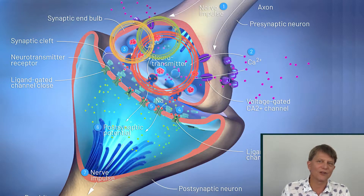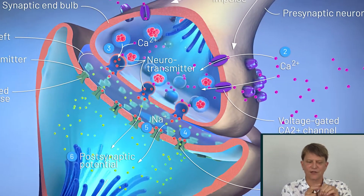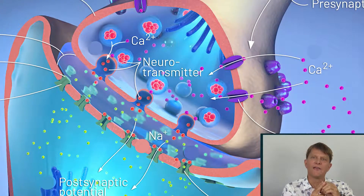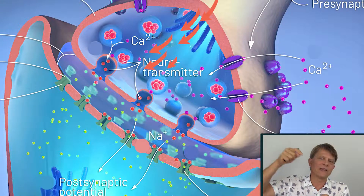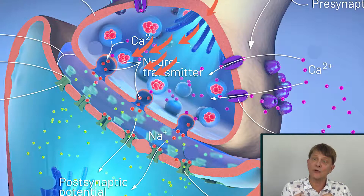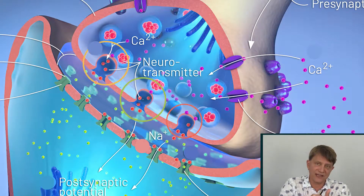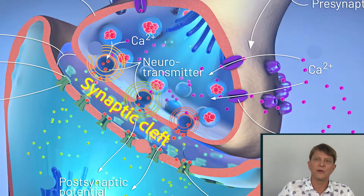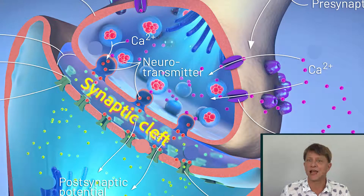Those chemicals are packed up into secretory vesicles — little balls containing the neurotransmitter. As the electrical impulse comes down to those vesicles, it instructs the vesicles to fuse onto the end terminal. As they fuse onto the end terminal, the neurotransmitters are released into the synaptic cleft.